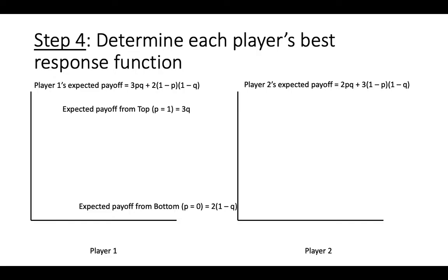Similarly, player 1's expected payoff from always playing bottom is 2 times the quantity 1-q. Note that player 1's expected payoffs from playing top or bottom are a function of q, the probability with which player 2 plays left or right. If we graph these expected payoffs, we find that these lines cross at q equals 2 fifths.